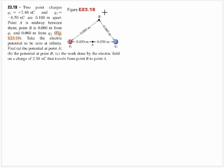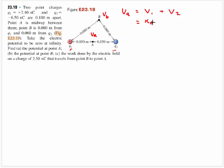Here are some solved problems for chapter 23. We're going to be looking for the voltage at point A and the voltage at point B due to charge 1 and charge 2 respectively. The nice thing about voltage is that it's a scalar and you can simply add the voltages together without worrying about directions. The voltage at A is just the voltage due to charge 1 plus the voltage due to charge 2, which equals K times charge 1 divided by radius 1, plus K times charge 2 divided by radius 2.